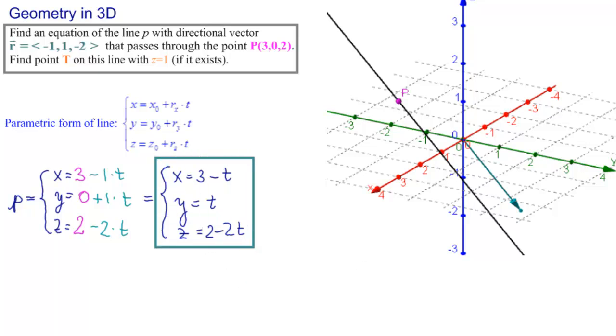And so now we're going to see if we can find a point T on this line, where z equals 1. On the other hand, z must equal 2 minus 2t. Is this enough information?